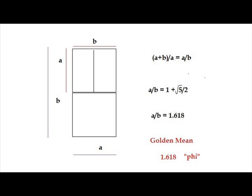Our discussion begins with a look at the golden mean, 1.618, denoted by the Greek letter phi. In 1202, Italian mathematician Leonardo Bonacci, otherwise known as Fibonacci, revived the notion of the golden mean.